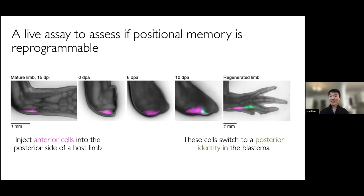This experiment actually tells us two things. Firstly, cells that were injected but were not recruited into the blastema remained mCherry-positive and anterior in identity — suggesting that at steady state, positional memory is fixed. But the descendants of those cells that were recruited into the blastema and transited that state were able to turn into posterior-looking cells that became green. So in the blastema, positional memory appears to be reprogrammable.